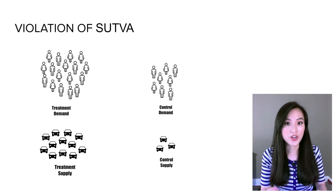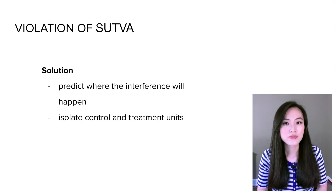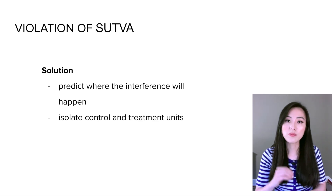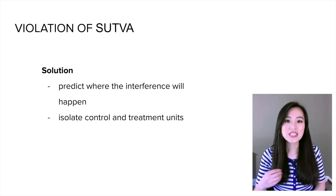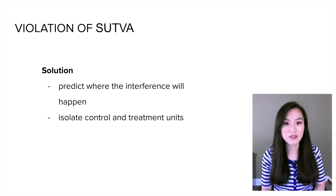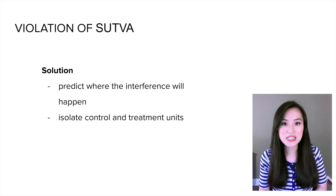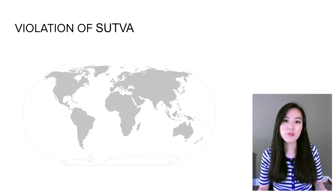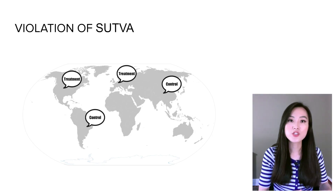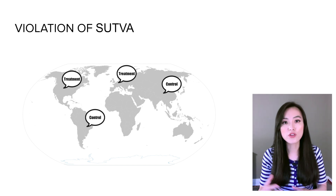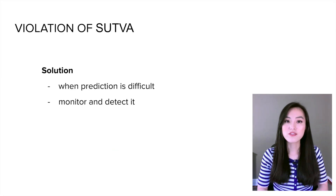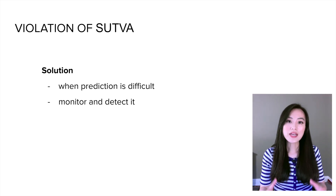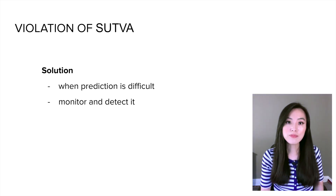If a new feature increases demand in the treatment group, then the treatment group needs more supply to fulfill that demand, which will impact supply available to the control group since resources are shared. We can't really avoid interference between groups entirely, but we can predict where it will happen and take it into consideration during the experiment design phase. For example, we could place the treatment group in a completely different geographic location to avoid potential interference. If predicting the interference is very challenging, we should monitor and detect it, and once the mechanism is well understood, update the experiment design.